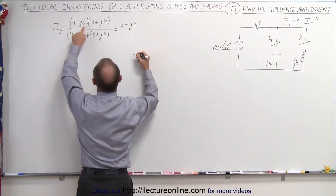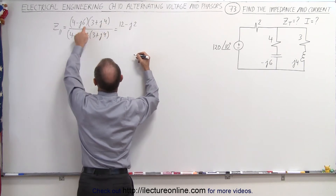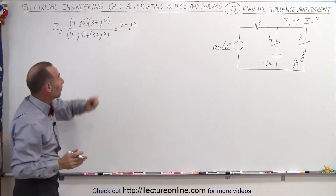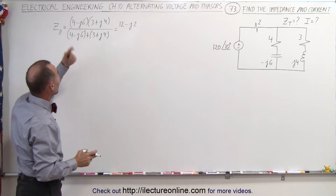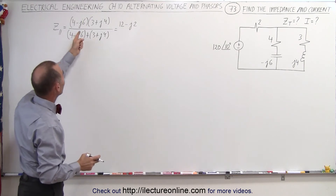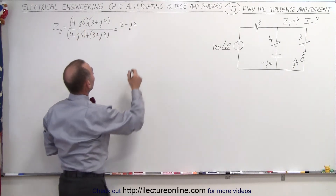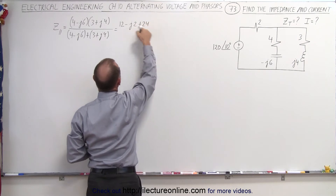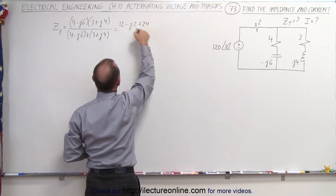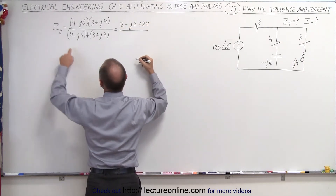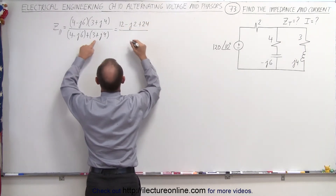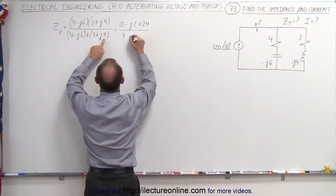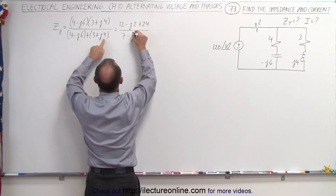Then we multiply the two imaginary numbers together and get 24 J-squared, which equals negative one — but then with the negative that becomes positive, so we end up with 4 times 6, a positive 24. That gives us a total of 36 in the numerator. In the denominator we get 4 plus 3, which is 7, and minus 6 plus 4, which is minus J2.